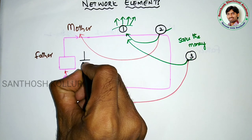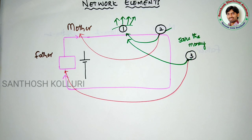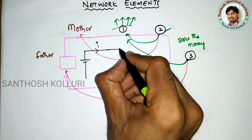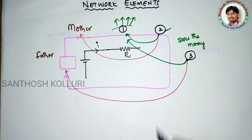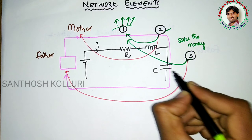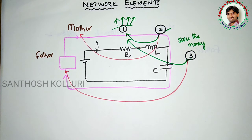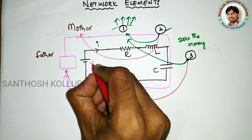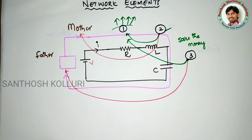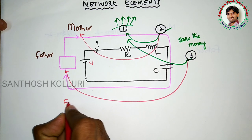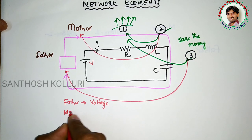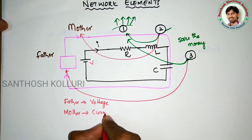In our electrical terminology, the father is nothing but the voltage source, and the mother is nothing but the current flowing through the circuit. Child number one is a resistor, child number two is an inductor, and child number three is a capacitor. This gives us a simple series RLC circuit consisting of voltage source, current, resistor, inductor, and capacitor.